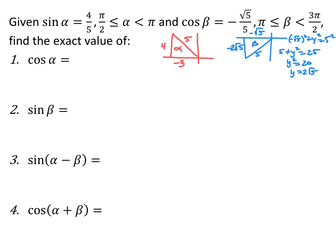For alpha: sine of alpha is 4/5, which is y over r, and alpha is in the second quadrant. Drawing that triangle, it's a 3-4-5 right triangle, so the x-coordinate is negative 3. For beta: cosine of beta is −√5/5, which is x over r, and beta is in the third quadrant. Using the Pythagorean theorem, y equals −2√5 because it's in the third quadrant. So cosine of alpha is x over r = −3/5, and sine of beta is y over r = −2√5/5.